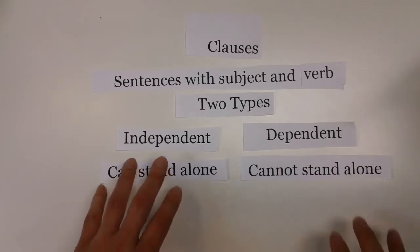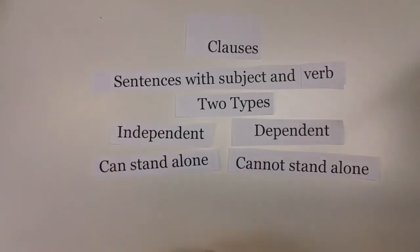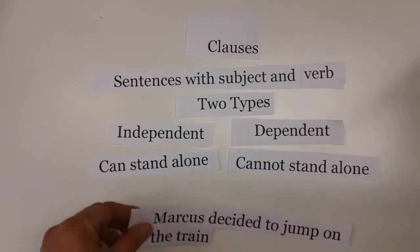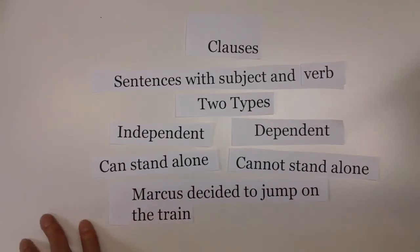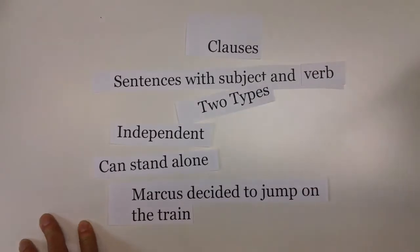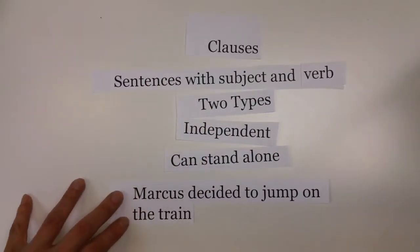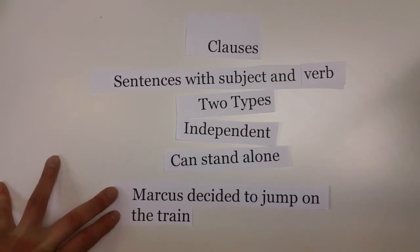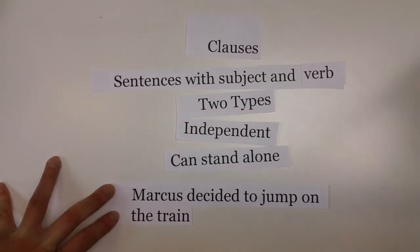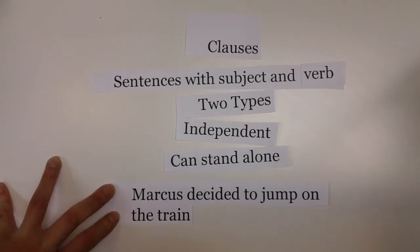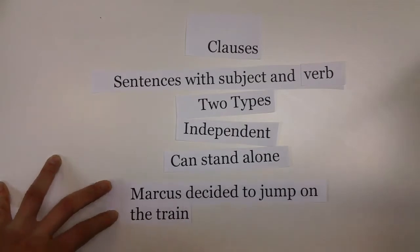Let's take a look at an example. If we said something like, "Marcus decided to jump on the train," this happens to be an independent clause. It stands alone because I can come up to you and just tell you that Marcus decided to jump on the train, and you would not question that sentence. There's nothing wrong with it.